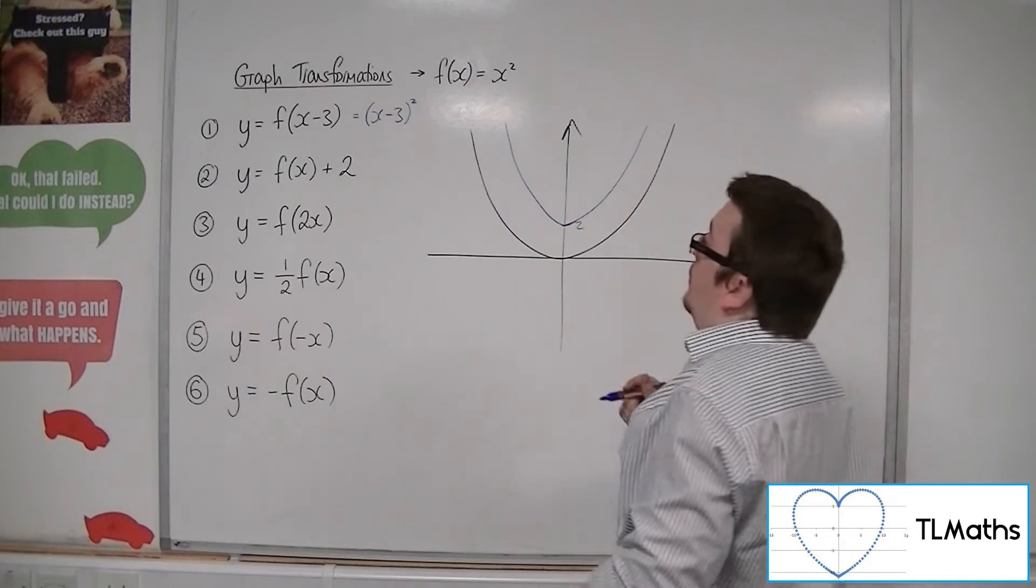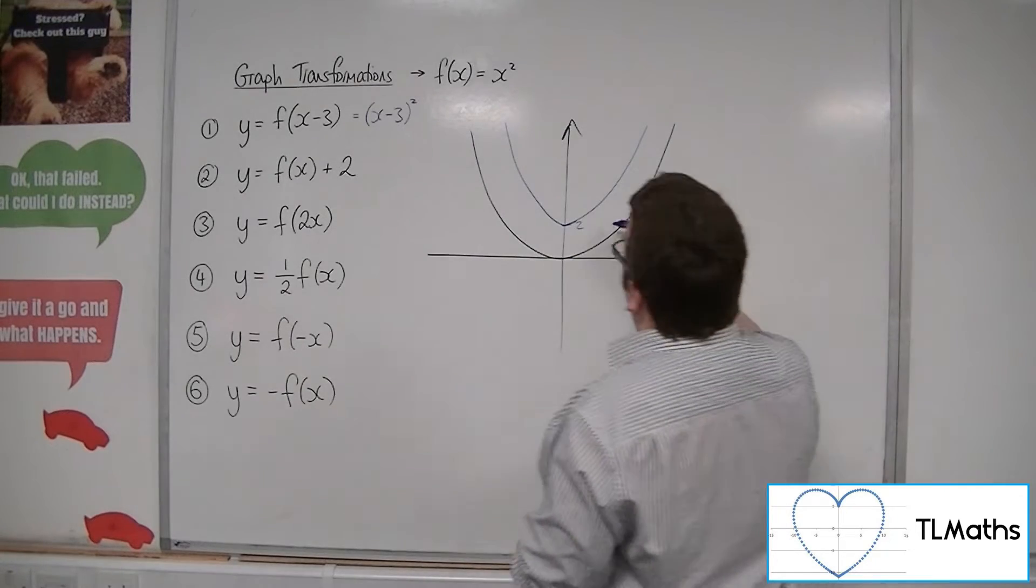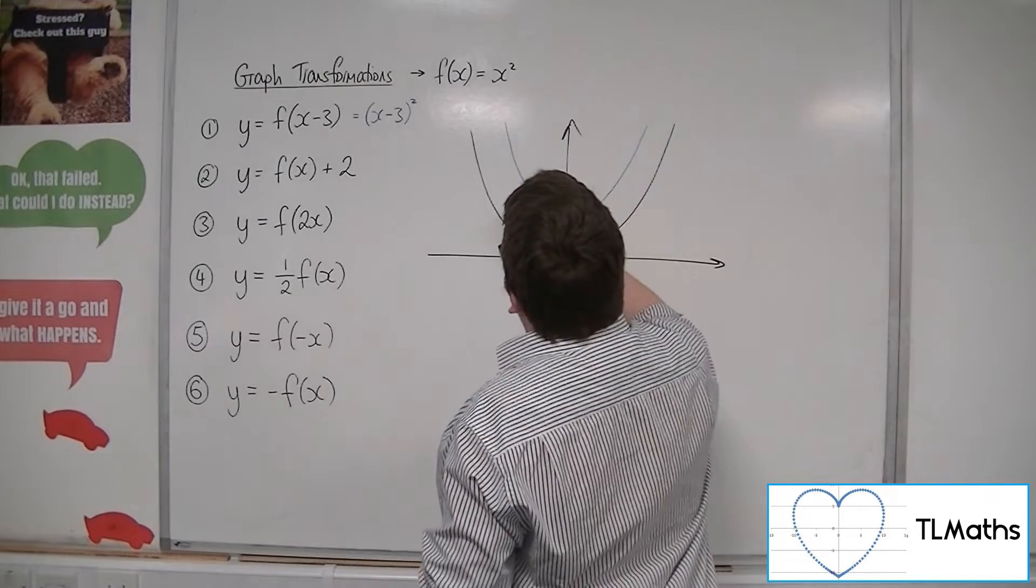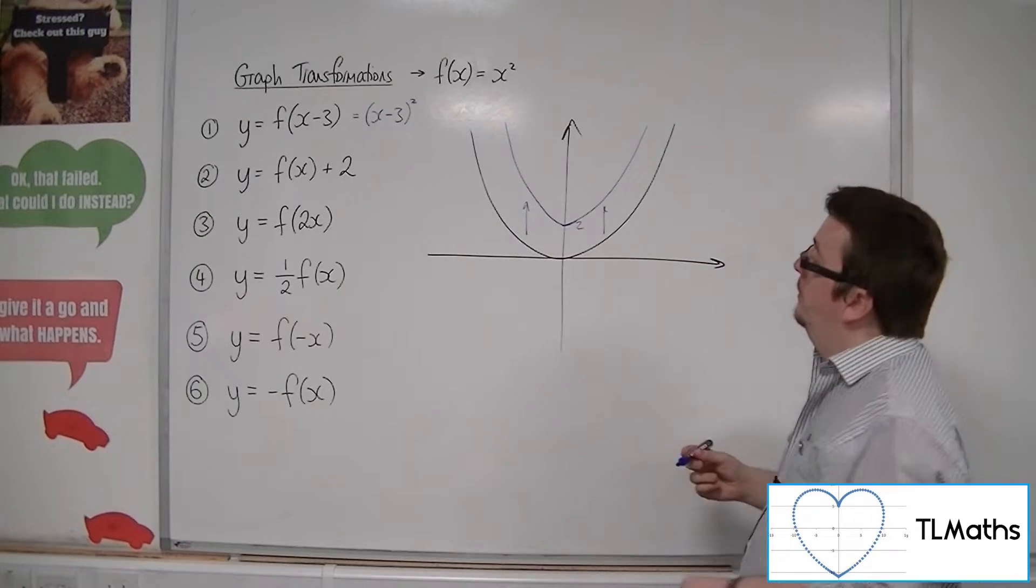To go right, it has moved 2 up. All of the points on the curve have moved up 2 units.